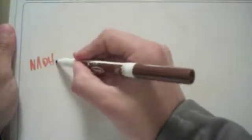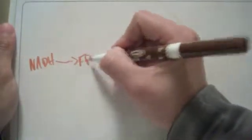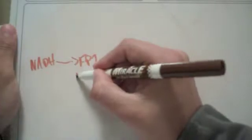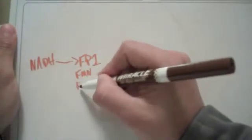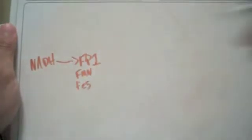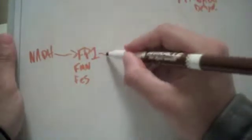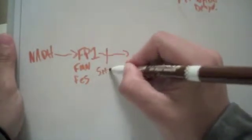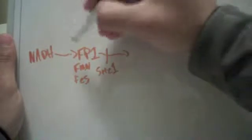NADH is going to go to flavoprotein number one. This is bound to FMN FES, which is a large complex. This is also known as NADH dehydrogenase. And this is site one, because this is our first ATP produced.